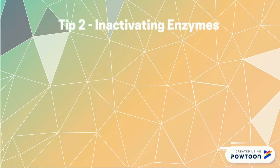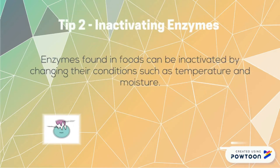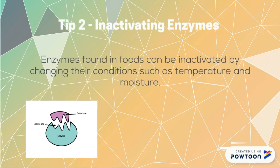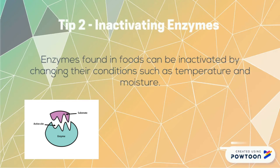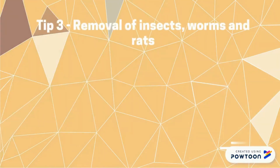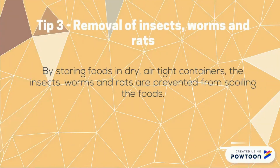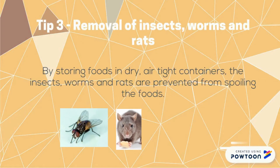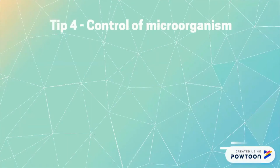Tip 2: inactivating enzymes by changing their conditions such as temperature and moisture. Tip 3: removal of insects, worms, and rats by storing food in dry airtight containers.